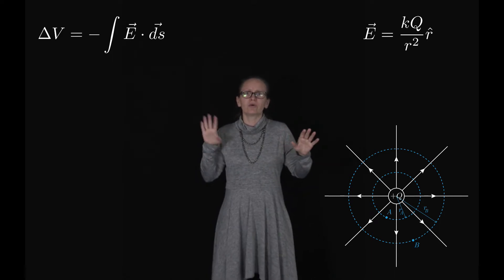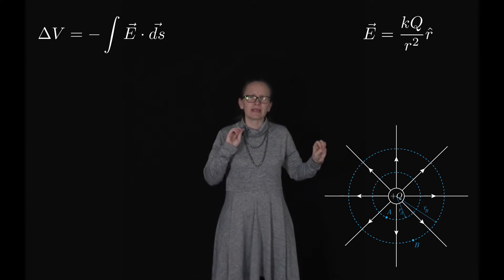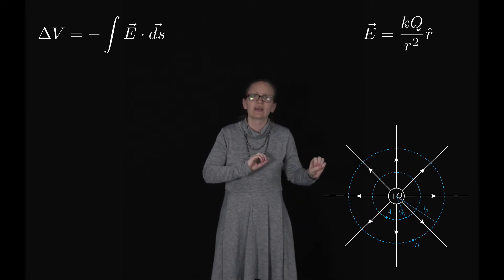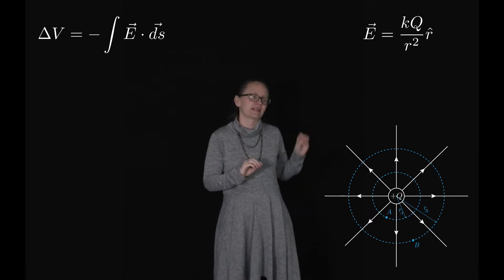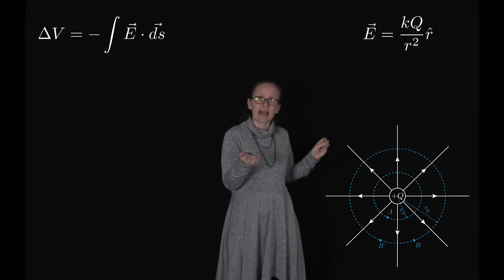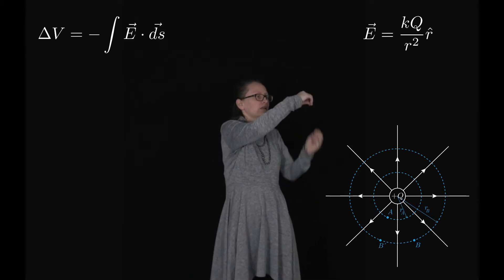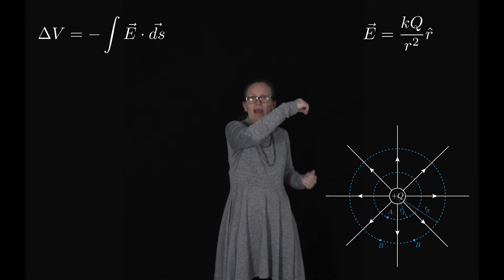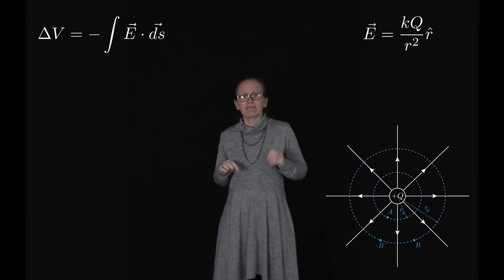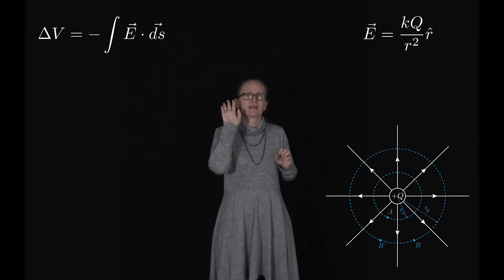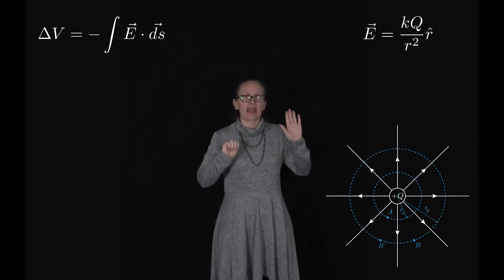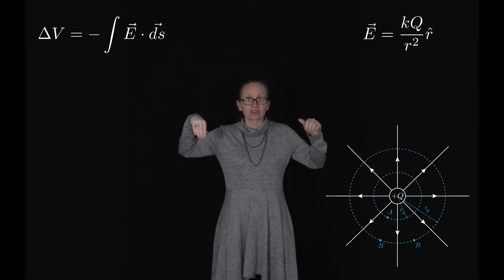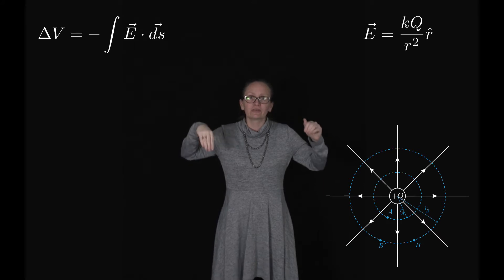Moving from A to B directly is a little complicated. So let's simplify it by introducing point B', which lies along the same radial line out from Q as point A. We then imagine moving between B' and B along a tangent to that radial field.